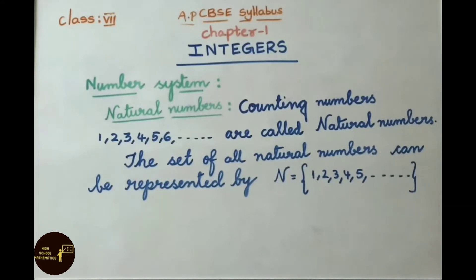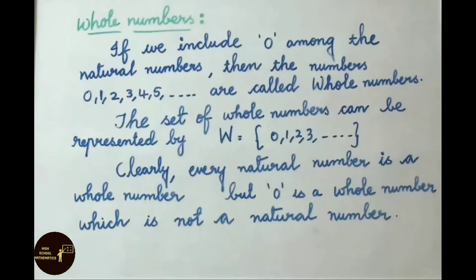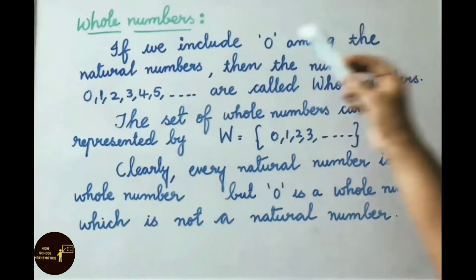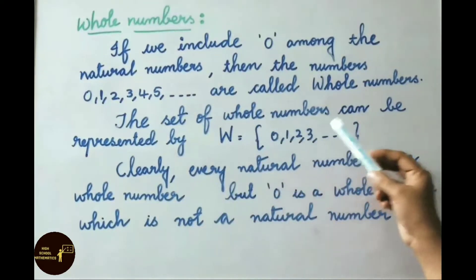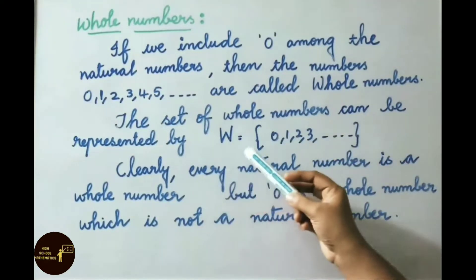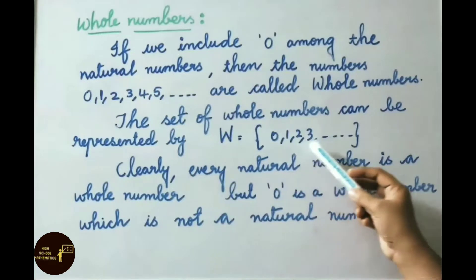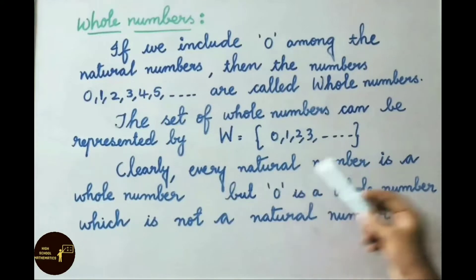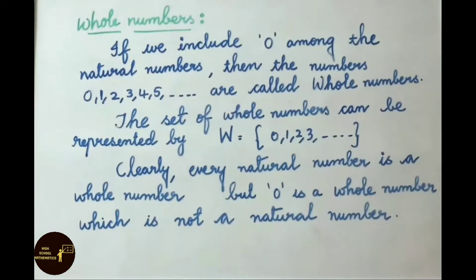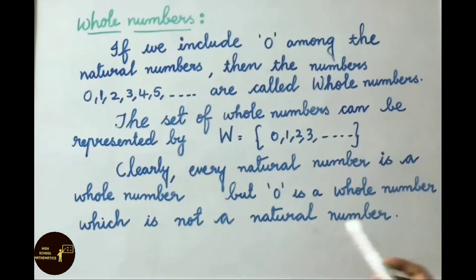Now let us see what are whole numbers. If we include 0 among the natural numbers, then the numbers 0, 1, 2, 3, and so on are called whole numbers. The set of whole numbers is represented by capital letter W = {0, 1, 2, 3, ...}. Clearly, every natural number is a whole number, but 0 is a whole number which is not a natural number.